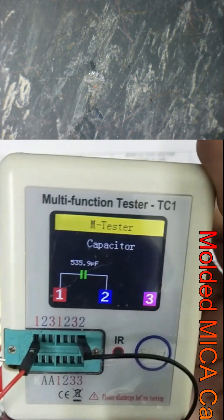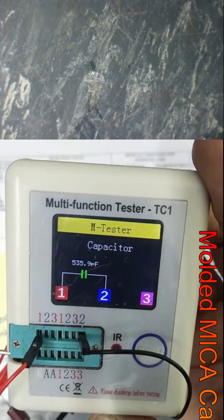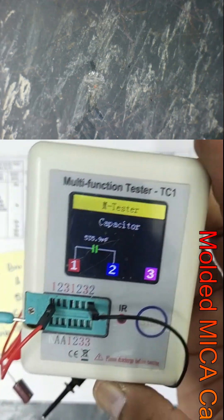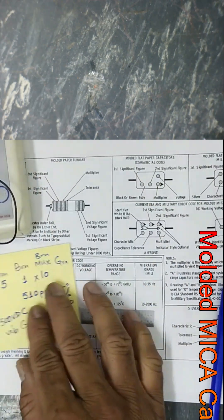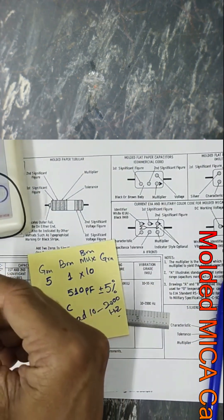The measured value is 535 picofarad. We calculated 510 picofarad with tolerance, so this code is perfect. Thanks for watching.